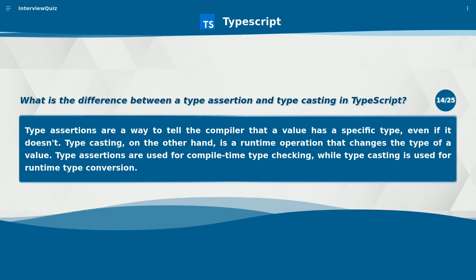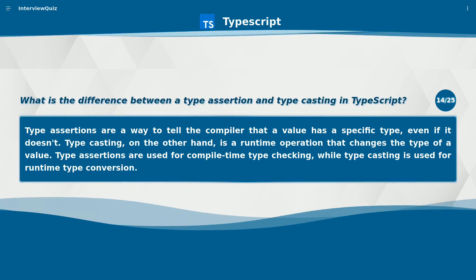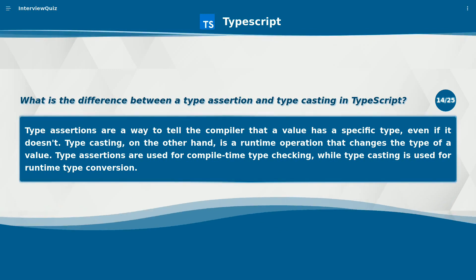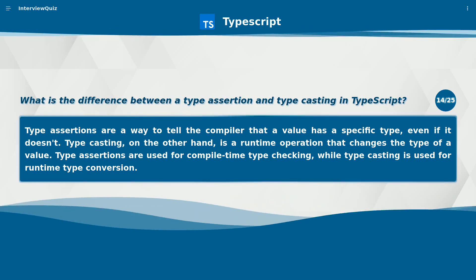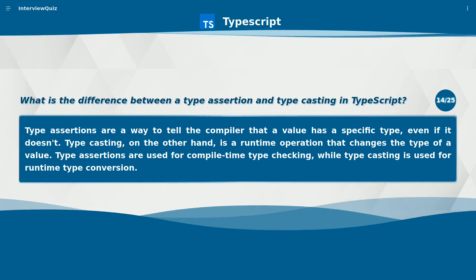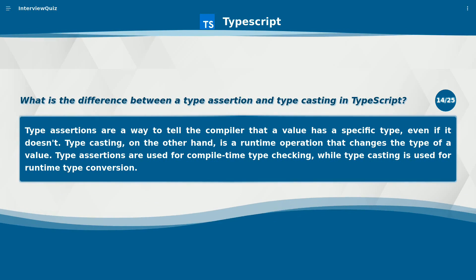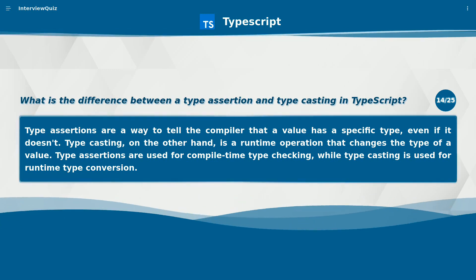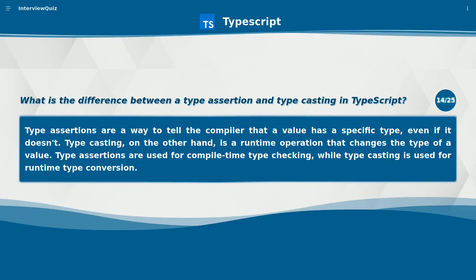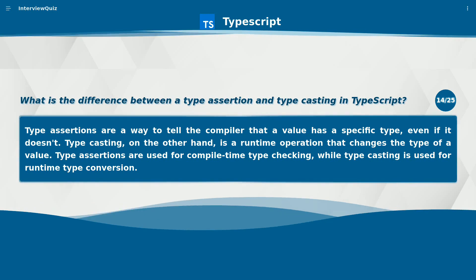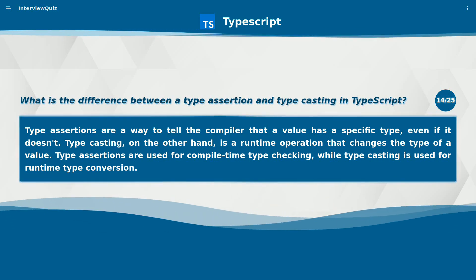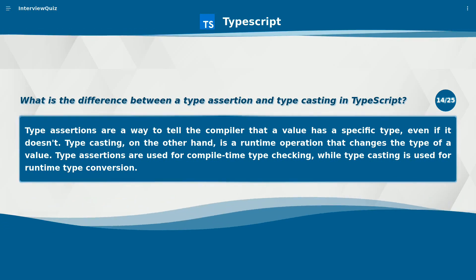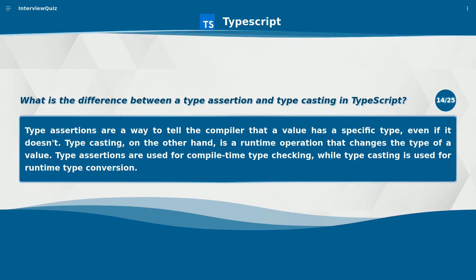What is the difference between a type assertion and type casting in TypeScript? Type assertions are a way to tell the compiler that a value has a specific type, even if it doesn't. Type casting, on the other hand, is a runtime operation that changes the type of a value. Type assertions are used for compile-time type checking, while type casting is used for runtime type conversion.